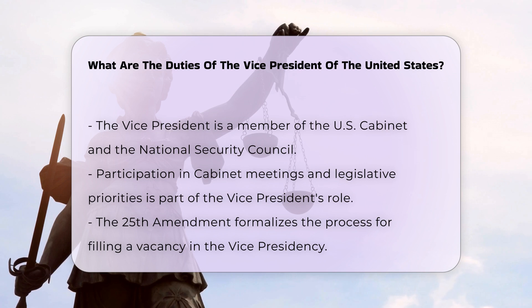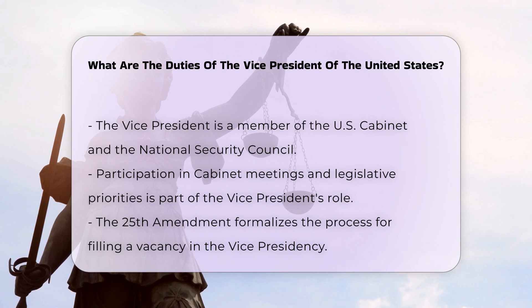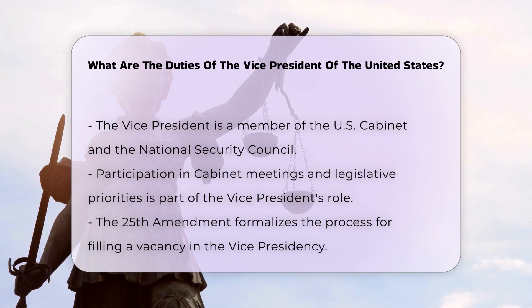The 25th Amendment to the Constitution formalized the process for filling a vacancy in the office of the Vice President, allowing the President to nominate a new Vice President, subject to confirmation by a majority vote in both houses of Congress.